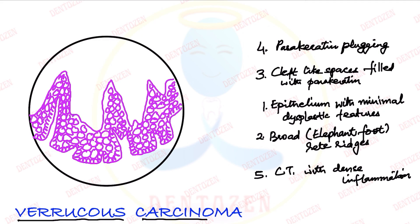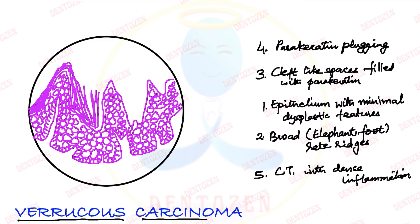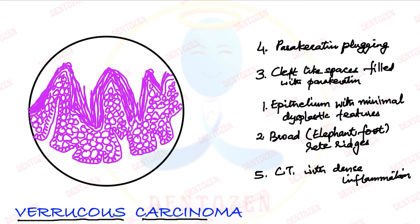We'll show a lot of keratin filling the spaces between the epithelium. This is parakeratin, so we have to show pyknotic nuclei — parakeratin means presence of pyknotic nuclei. This parakeratin is filling the spaces like a plug, so it is called parakeratin plugging.